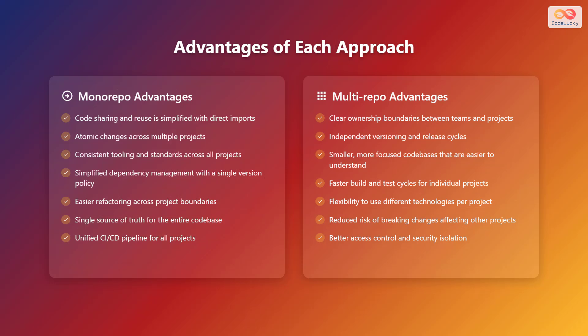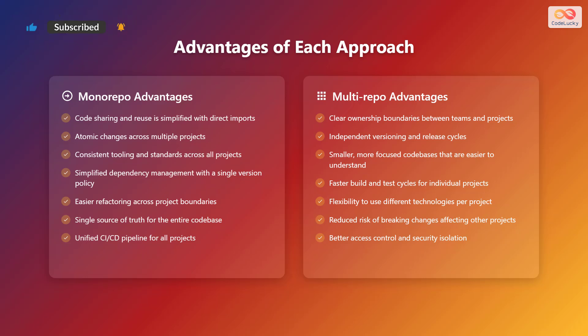Let's explore the benefits of each approach. Monorepo advantages include simplified code sharing and reuse with direct imports. Atomic changes can be made across multiple projects, ensuring consistency. There's consistent tooling and standards across all projects. Dependency management is simplified with a single version policy, facilitating easier refactoring across project boundaries. There is a single source of truth for the entire code base, and it provides a unified CI/CD pipeline for all projects.